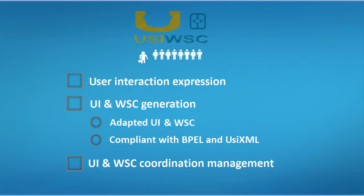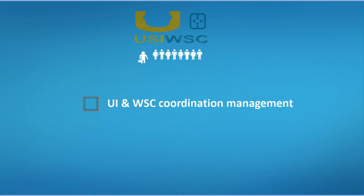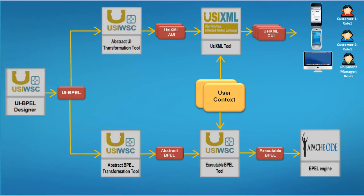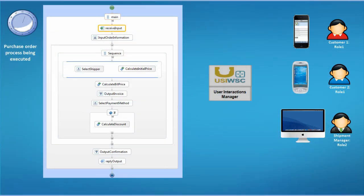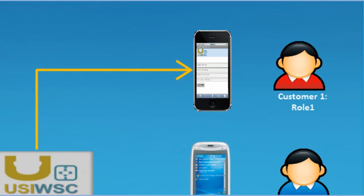The third key feature of the USIWSC framework is the management of the coordination between the control flow of the composition and the navigation flow of its user interface. This coordination is ensured by a user interface manager, which routes data between the BPEL engine and the user devices. To illustrate this, consider the purchase order process scenario: when the process requires order information from the customer, the engine suspends execution and sends a message to the manager. When the manager receives this message, a concrete user interface corresponding to this data interaction is generated, adapted to the customer's smartphone device.